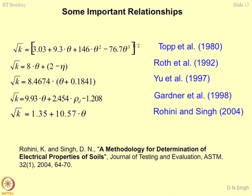The second equation is given by Roth et al., which is again a function of volumetric moisture content theta and the porosity. This is the mapping of two phenomena: the matrix of the soil porosity and the volumetric moisture content theta. The third equation was given by U et al., where the dielectric constant is a function of volumetric moisture content of the soil mass.